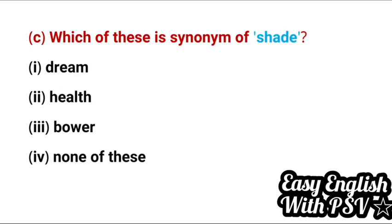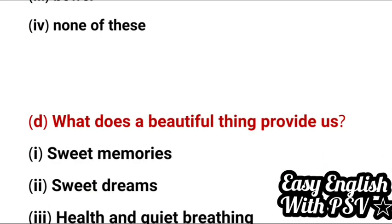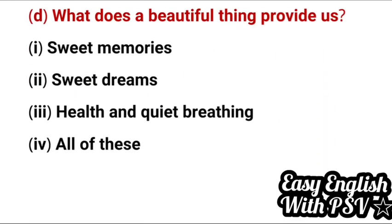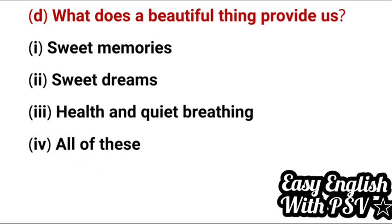Which of these is a synonym of 'sade'? 'Sade' — a sadie cottage is known as 'bower'. So 'bower' is the synonym. Question: What does a beautiful thing provide us? Options: sweet memories, sweet dreams, health and quiet breathing, all of these. Correct answer: all of these — all these things are provided to us by a beautiful thing.